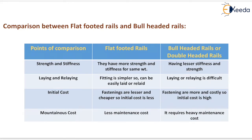For laying and relaying: in case of flat footed rail, fitting is simpler so they can be easily laid or relayed. But in case of bull headed rails, laying or relaying is difficult.